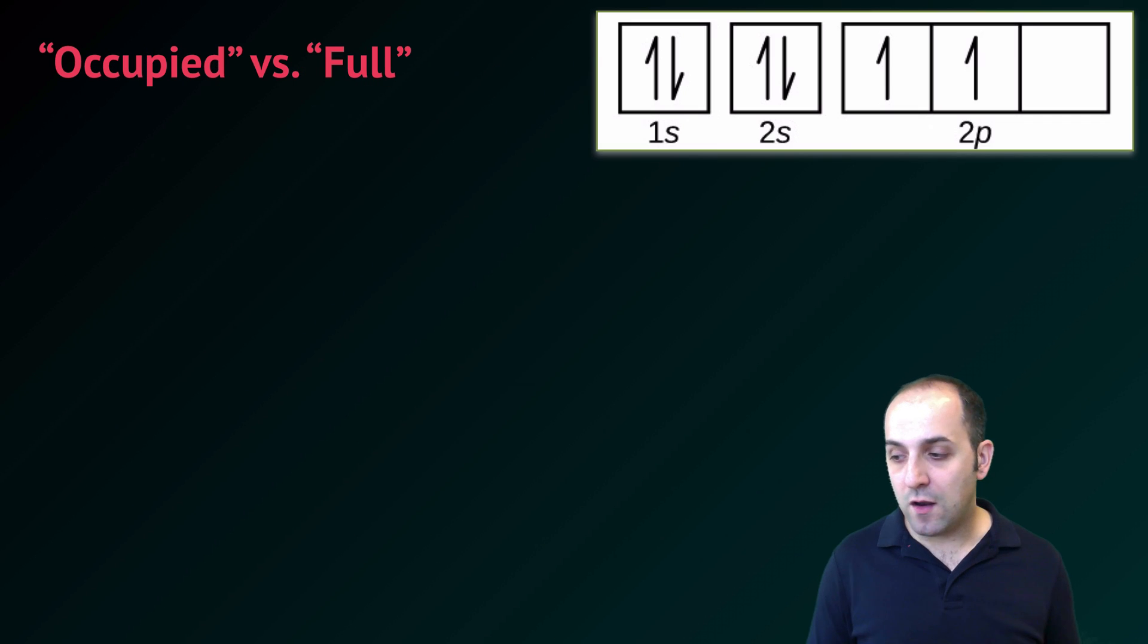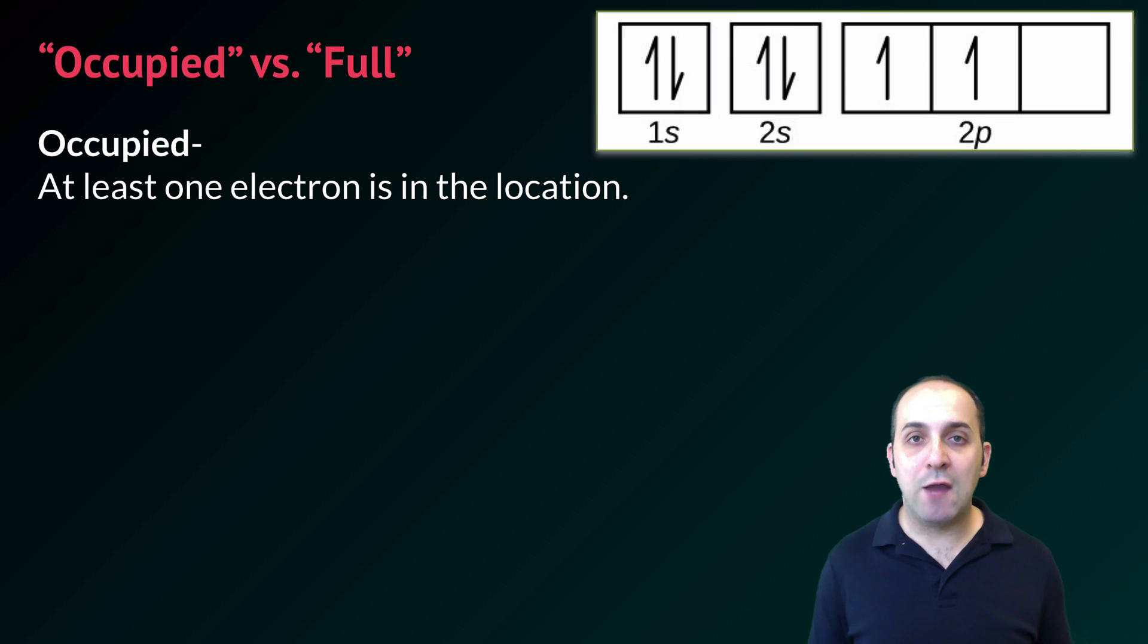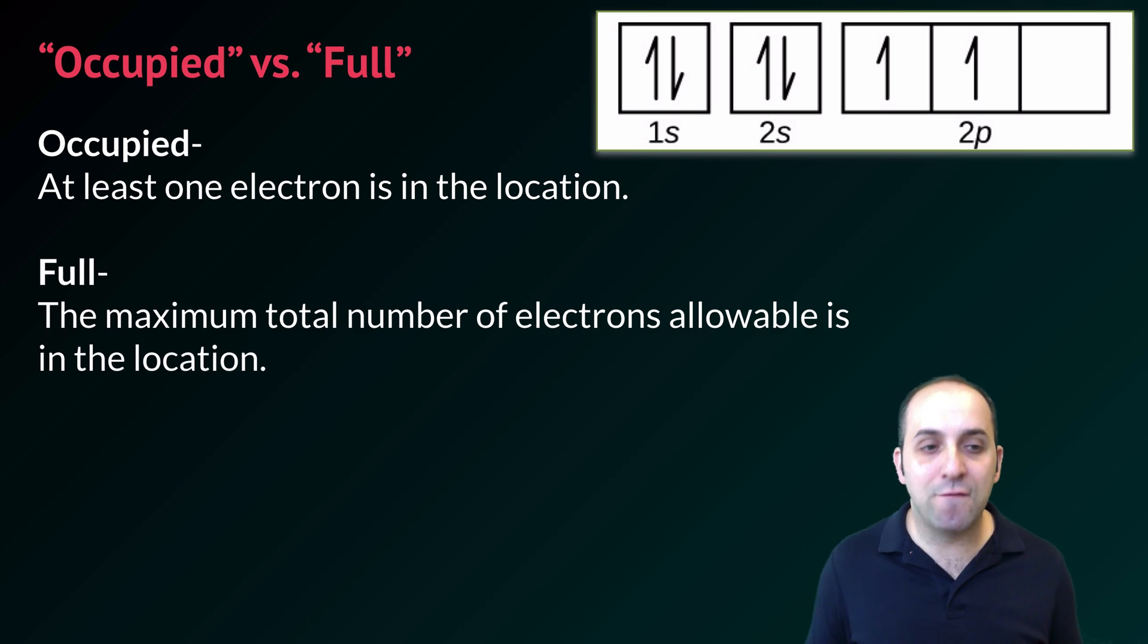Another thing we should talk about here at the end is this notion of occupied versus full. When we talk about occupied, we mean at least one electron is in the particular location. And when we talk about full, we mean the maximum total number of electrons that's allowable is in the location.